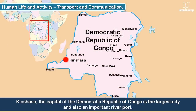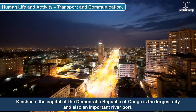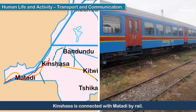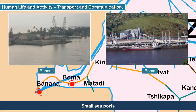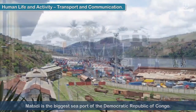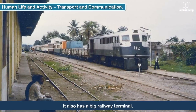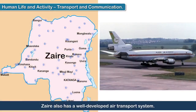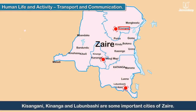Kinshasa, the capital of the Democratic Republic of Congo, is the largest city and also an important river port. Kinshasa is connected with Matadi by rail. Panana and Boma are two small seaports. Matadi is the biggest seaport of the Democratic Republic of Congo and also has a big railway terminal. Zaire also has a well-developed air transport system. Kisangani, Kinanga and Lubumbashi are some important cities of Zaire.